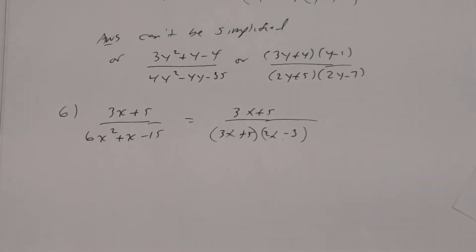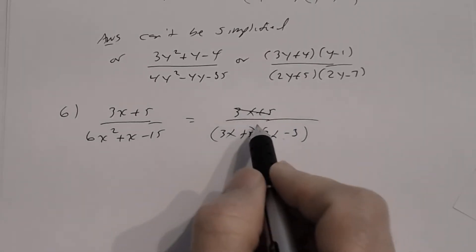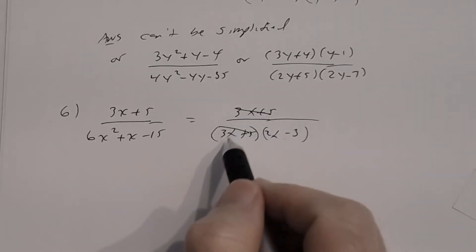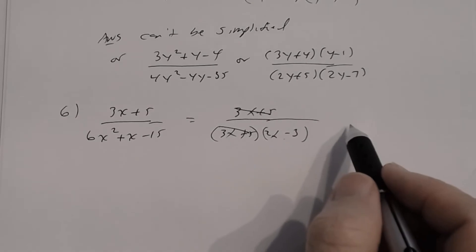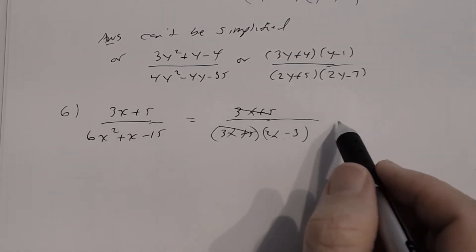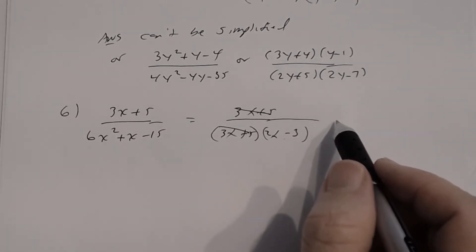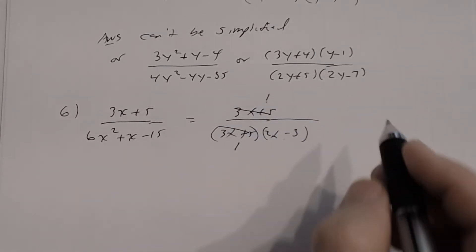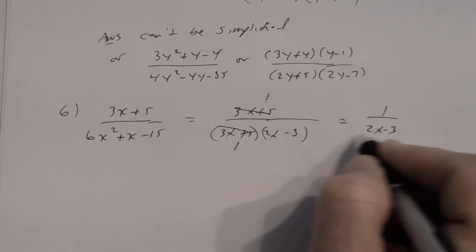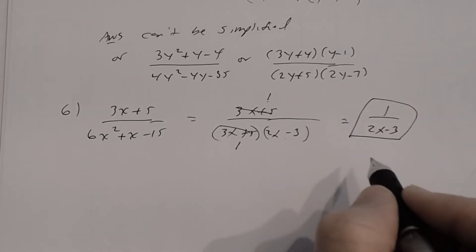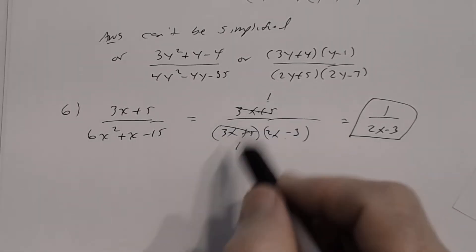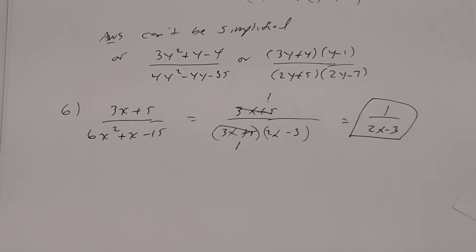There is a common factor: (3x + 5) appears in both numerator and denominator. Be careful — some students cross it out and write 2x − 3 as the answer, but that's wrong. When you divide out (3x + 5) you're left with a factor of 1 in the numerator, so the correct answer is 1 divided by (2x − 3).